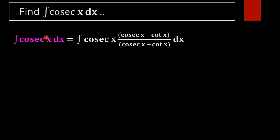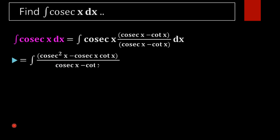The next step is expanding the numerator. We get cosec(x) times cosec(x) = cosec²(x), and cosec(x) times cot(x) gives minus cosec(x)·cot(x), all divided by (cosec(x) minus cot(x)).